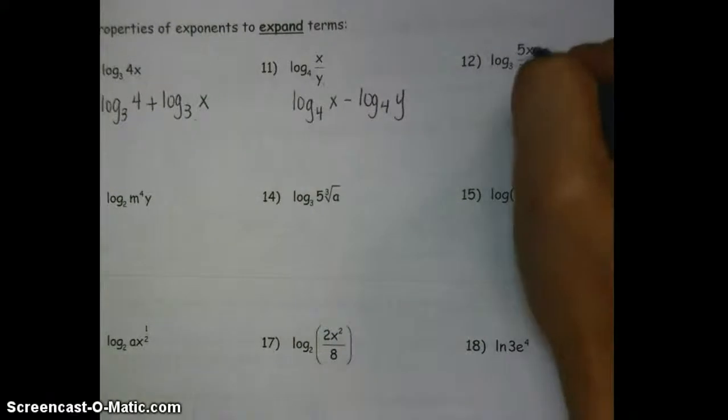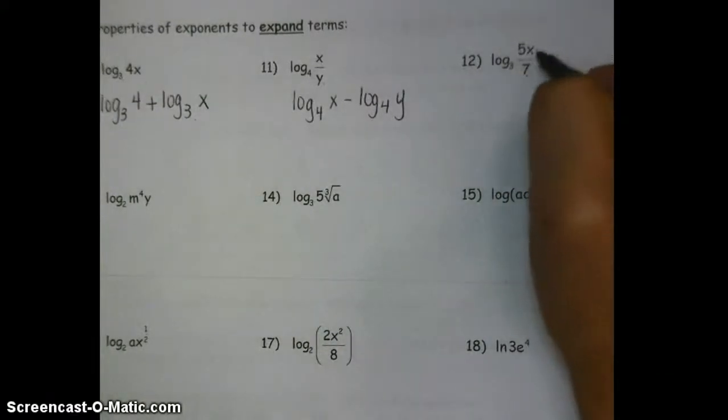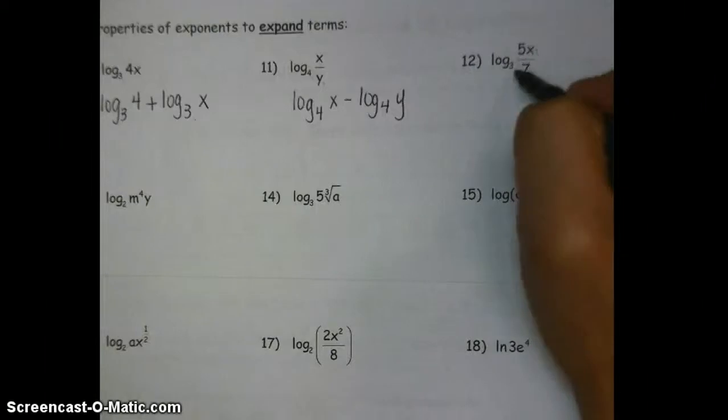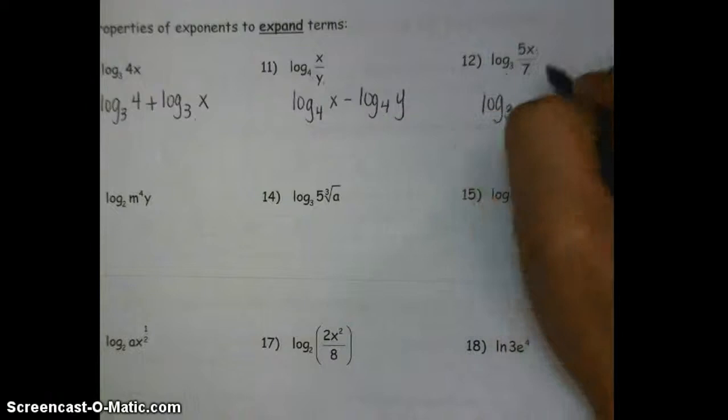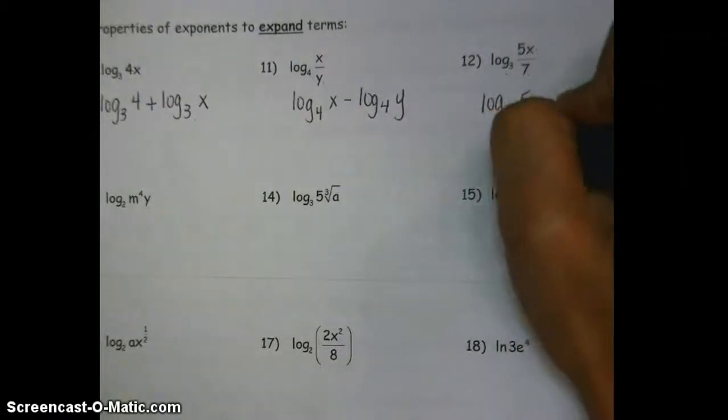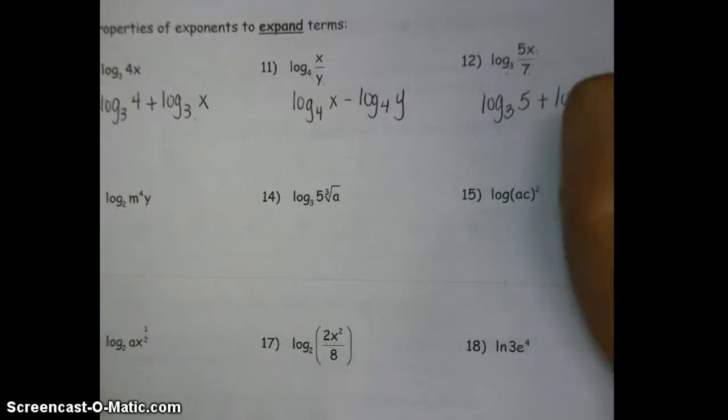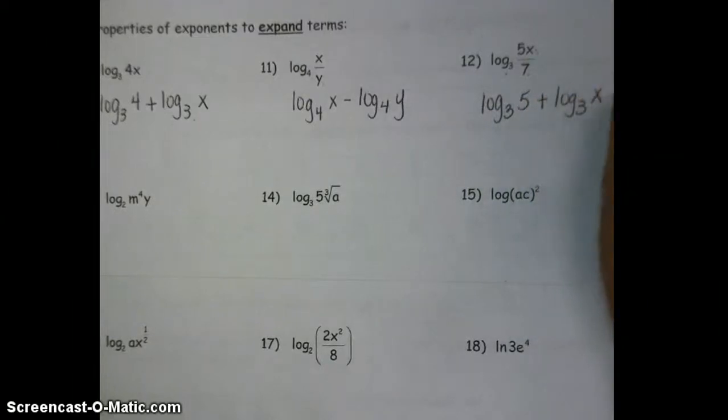Here's another one that I recognize. This is a quotient, but this is also a product on top. So I will actually have three log things that I have to piece together. So log base 3 of 5 plus log base 3 of x minus log base 3 of 7.